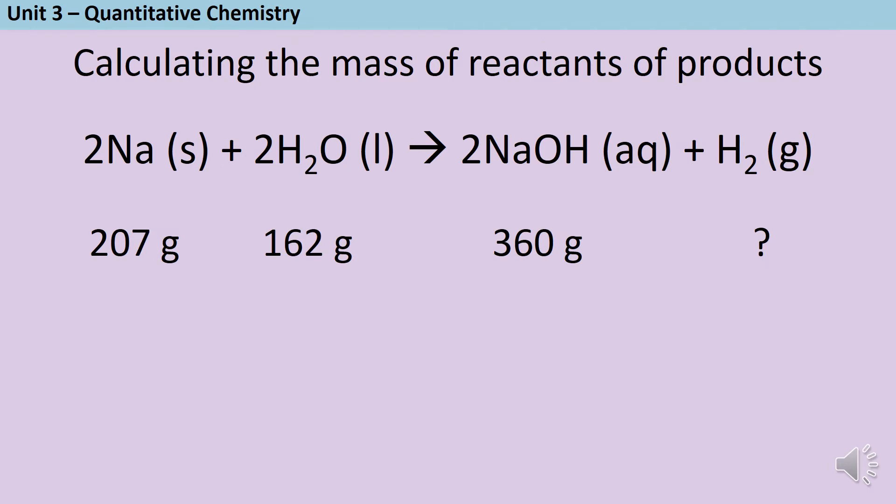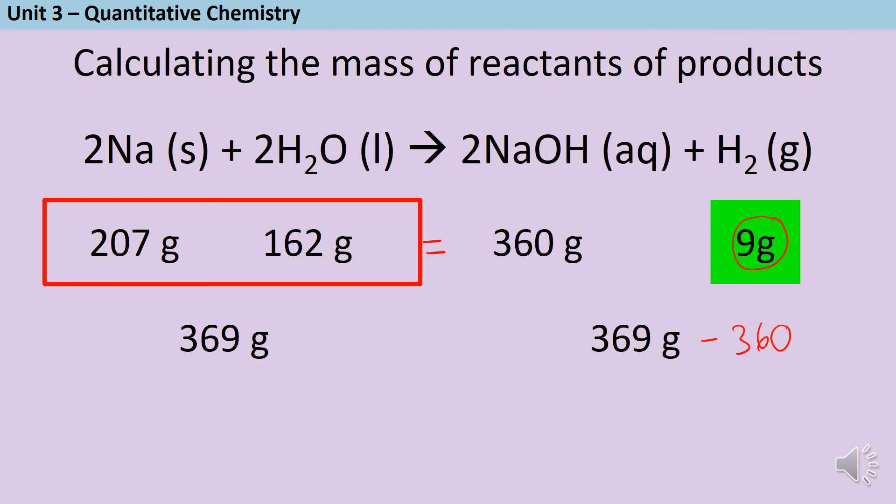Here's another worked example of this type. 207 grams of sodium reacts with 162 grams of water to make 360 grams of sodium hydroxide. And what mass of hydrogen? That's what we're trying to figure out. So again, I know that the mass of the reactants must equal the mass of the products. I can add together the masses of the reactants to get a total of 369. And then I know that the mass of the products must be the same. So in order to work out the mass of this hydrogen here, I'm going to do 369 take away 360. And that gives me a total mass of hydrogen of 9 grams.